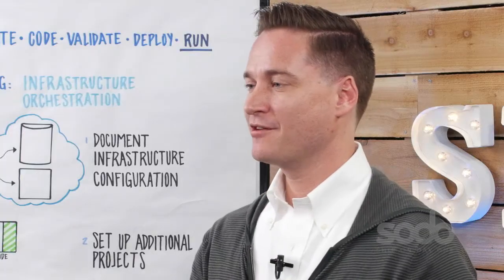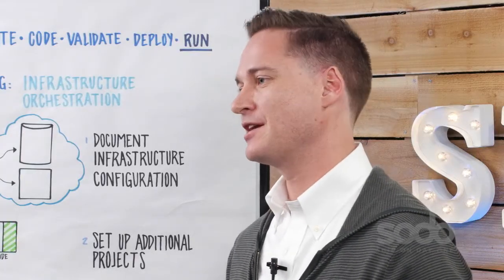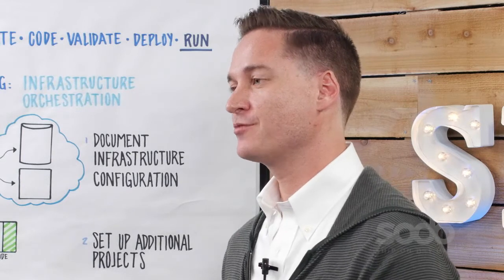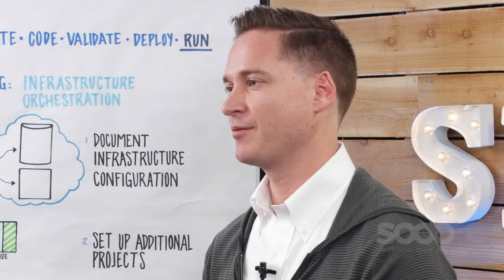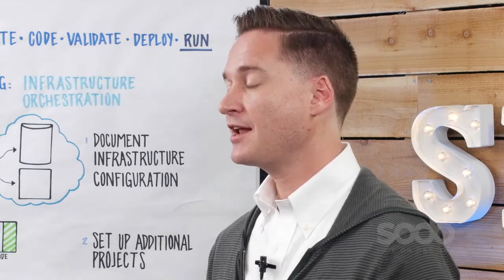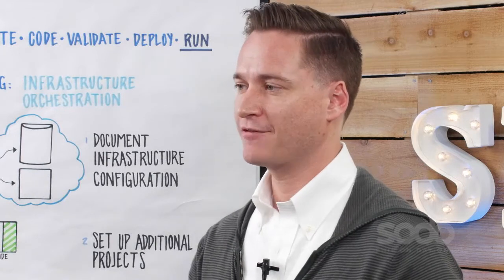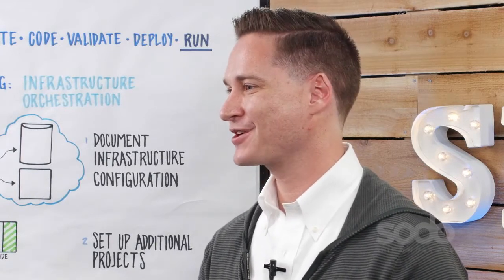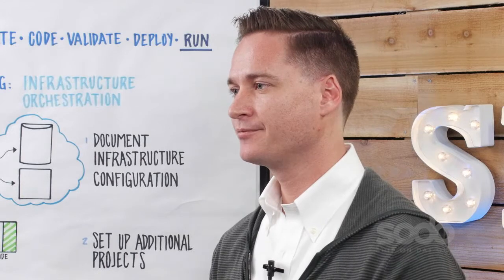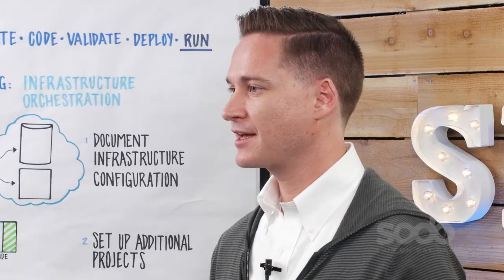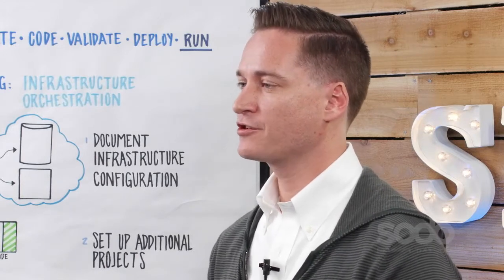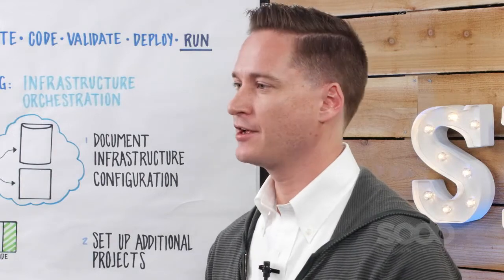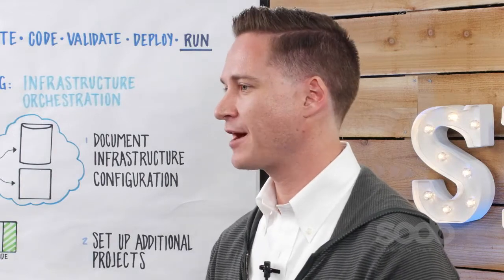Step 3: make sure that everyone on the team understands that this level of provisioning should be very similar to software deployments. Set as a goal that no one should ever have to SSH into a box when setting up infrastructure or deploying software. If that's the case, then take a look at the infrastructure orchestration and see if you could better configure it in order to remove that manual step.